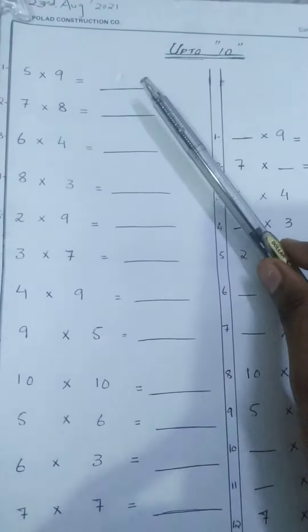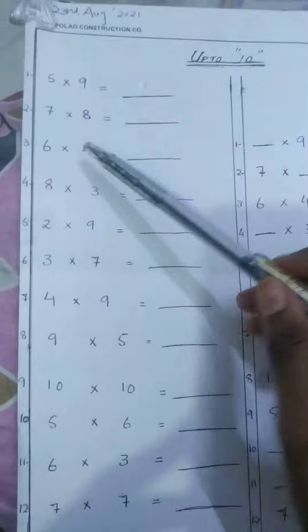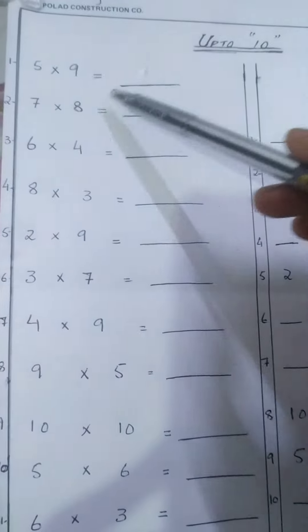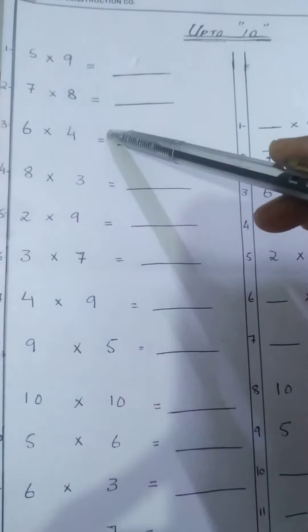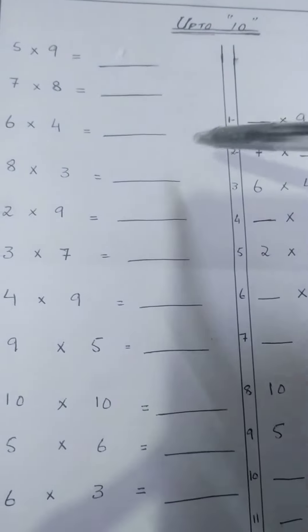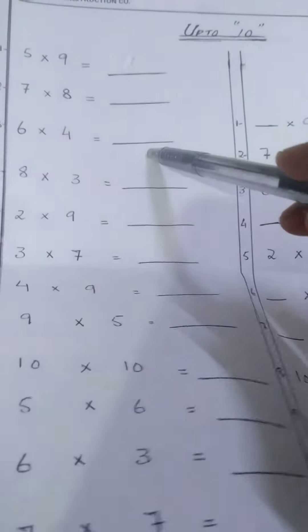What you have to do, you have to take a blank page and just read number 1 and write the answer within 3 seconds. Like 5 x 9s are this, 7 x 8s are this. Write the answer within 3 seconds of each question.